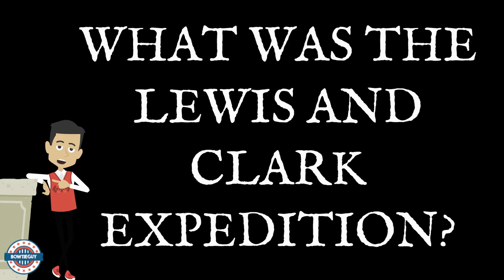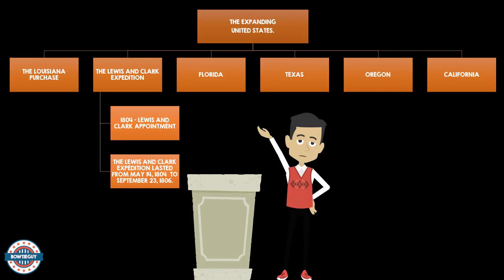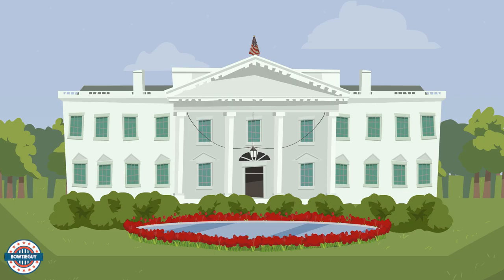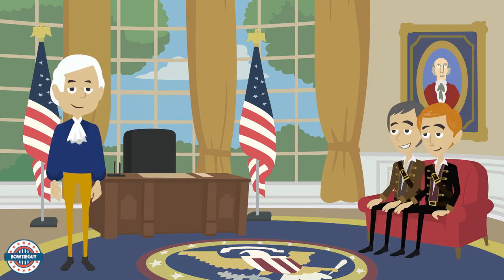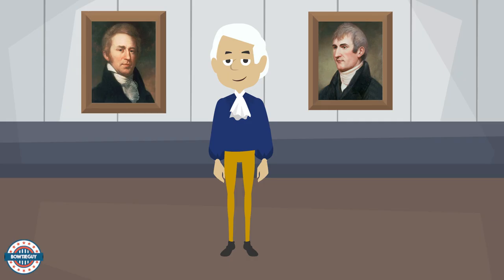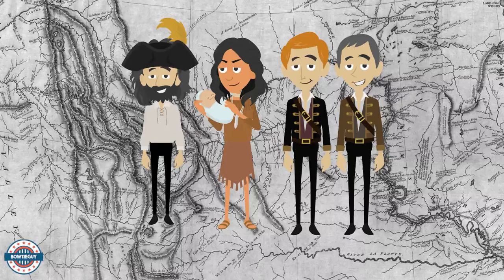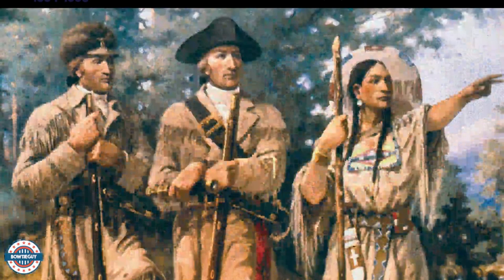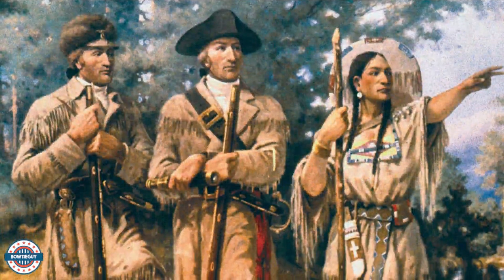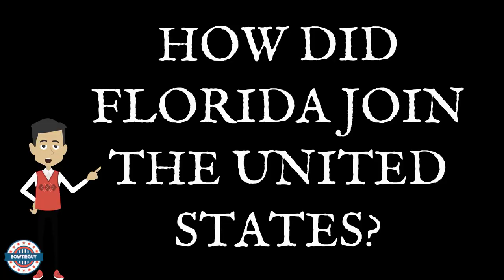What was the Lewis and Clark Expedition? In 1804, American President Thomas Jefferson appointed Meriwether Lewis and William Clark to explore the Louisiana Territory. The Lewis and Clark Expedition lasted from May 14th of 1804 to September 23rd of 1806.